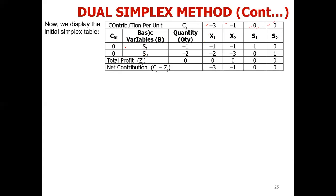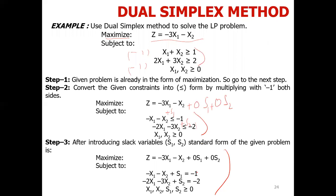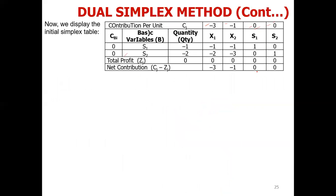The first constraint on the right-hand side is minus one. For that row: X1 coefficient is -1, X2 is -1, S1 is 1, S2 is 0. That is the first constraint. The second constraint follows similarly. The ZJ value is calculated as the quantity multiplied by the coefficient of the basic variable summed across all basic variables. Against X1, ZJ is: minus 1 times 0 plus minus 2 times 0, which equals 0, and so on for all columns.